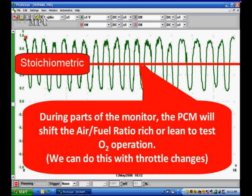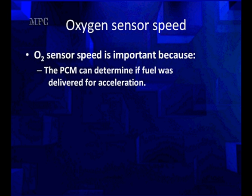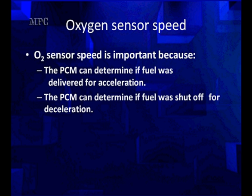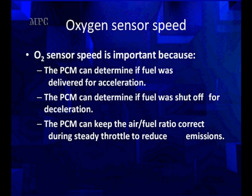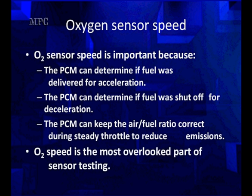What's going to happen? The way the computer's going to handle this is during the process, the PCM is going to shift the air fuel rich and lean to test for O2 operation, get the maximums. We're going to do the same test, only we're going to use throttle changes. Operating speed. O2 sensor speed is important because the PCM determines if fuel was delivered for acceleration. How can it tell if it's slow? It can determine if fuel was shut off for deceleration. If it's slow, it loses that information. The PCM can keep air fuel ratio correct during steady throttle to reduce emissions. All of these are only possible with proper speed of the O2 sensor. The O2 speed is one of the most overlooked parts of sensor testing.